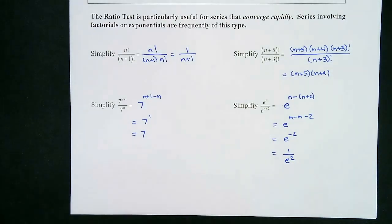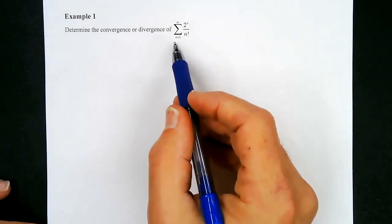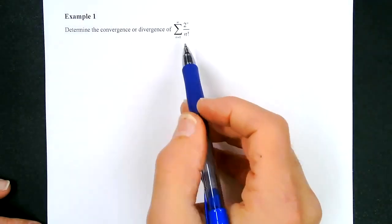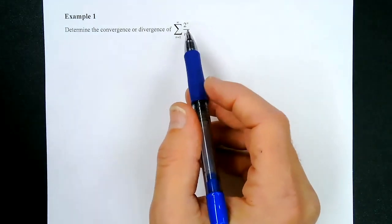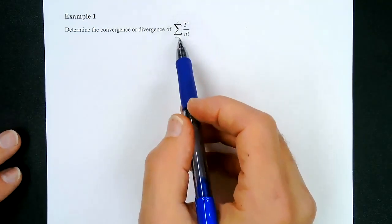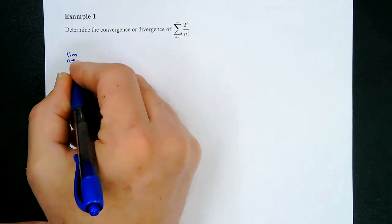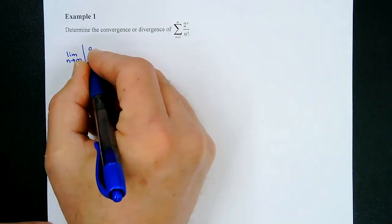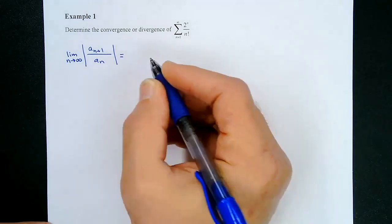That's why I point this out and make you get a little better at it by looking at these simple problems. Now let's go use the ratio test. Here we have a series that involves an exponential and a factorial — this is a prime candidate for using the ratio test. So the limit as n approaches infinity of the absolute value of a_sub_(n+1) over a_sub_n.